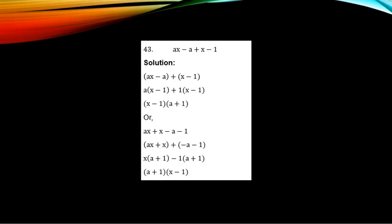Example 43: Factorize AS minus A plus S minus 1. We have 4 terms. AS and A have a common term, so take them in one group. S minus 1 forms the other group. From the first group, A is common; factoring out A gives (S minus 1). In the second group, nothing is common except 1; factoring out 1 also gives (S minus 1). Since (S minus 1) is common to both sides, factoring it out leaves A from the first group and plus 1 from the second, giving (S minus 1)(A plus 1).